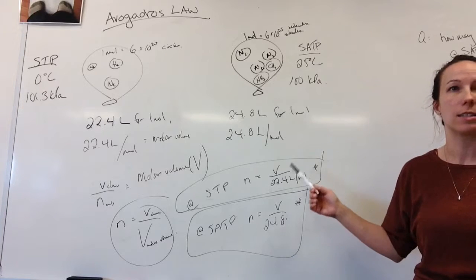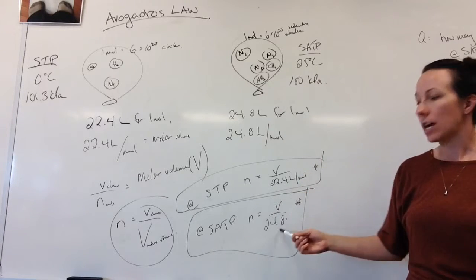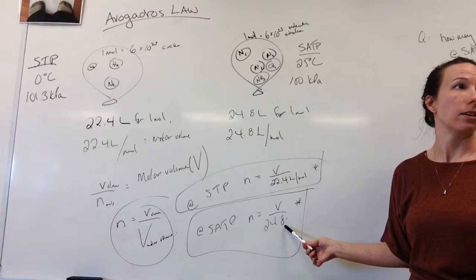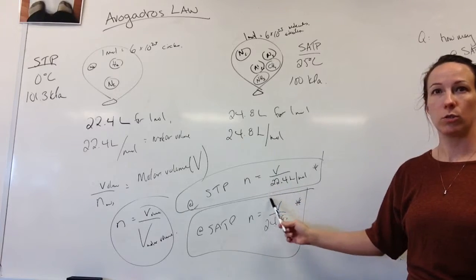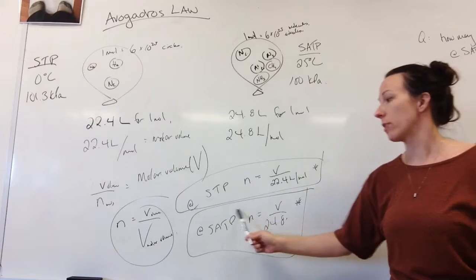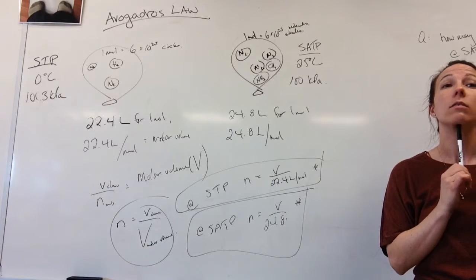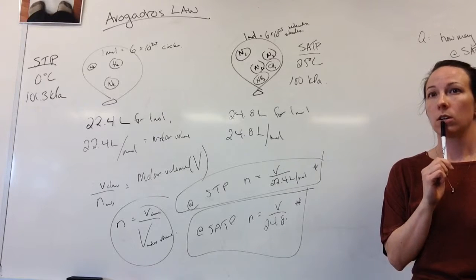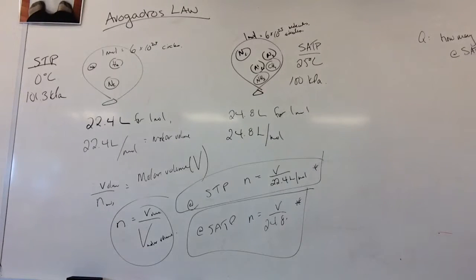Memory hints: it's the same structure as little v over big V, same as little m over big M. The numbers: 2 times 2 is 4, 2 times 4 is 8 — so 22.4 and 24.8. The smaller number 22.4 goes with the smaller STP, and the bigger number 24.8 goes with the bigger SATP. Is this on the test? Yes — it's the last thing for the gas unit and plays a big role in our very last unit of this course.